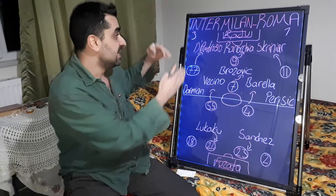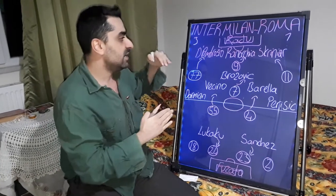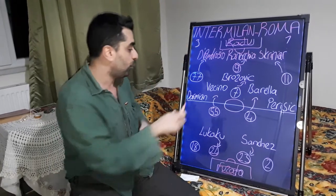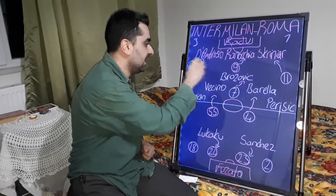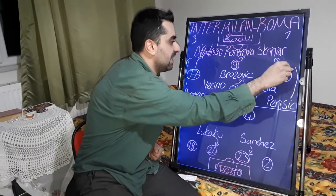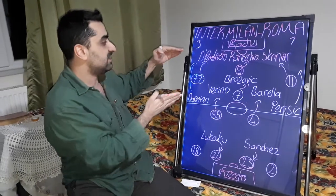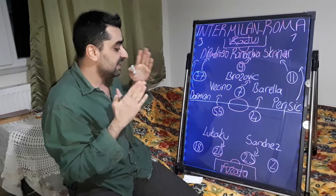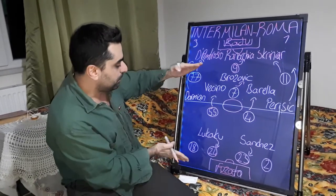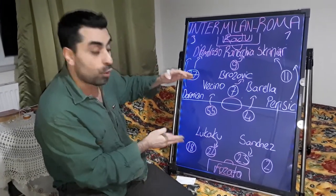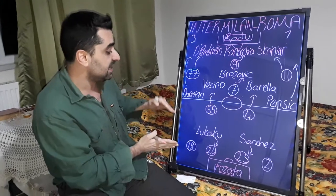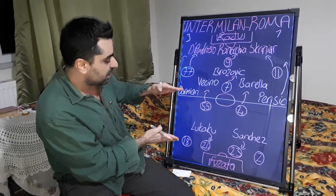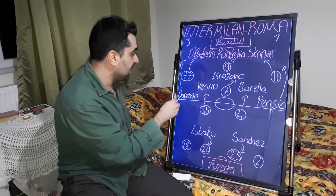In Roma's attacks, Inter Milan's defence line turned into five, playing in a 5-3-2 formation. Darmian and Perisic came back and dropped deep to make the defensive line five. In the first half, Roma's left wing-back was defensively weak, and Inter developed dangerous attacks from Roma's left wing through Darmian.